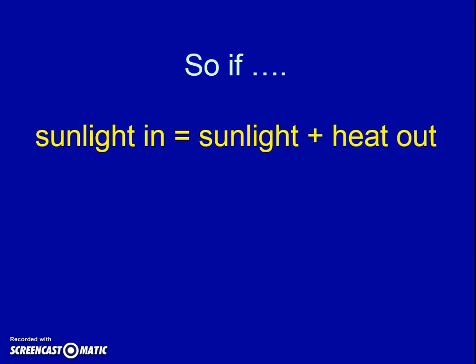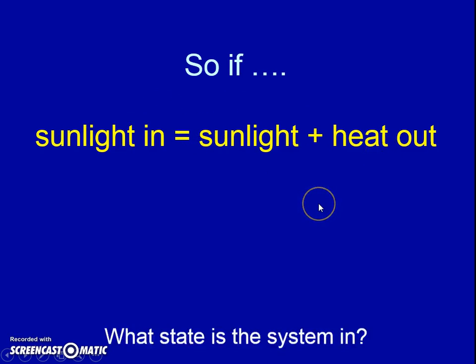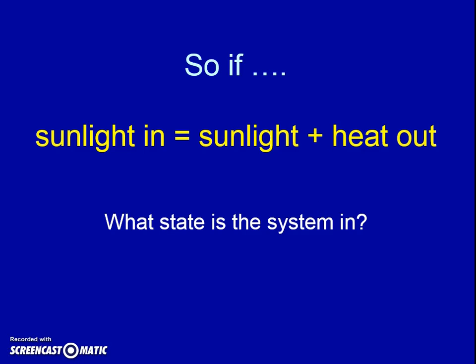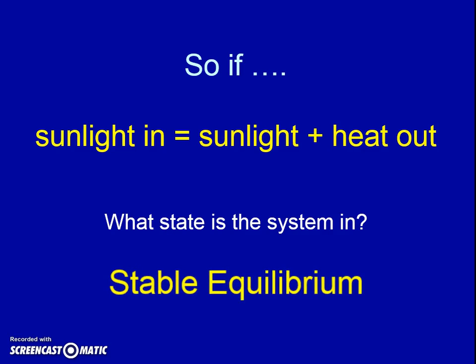The big idea: sunlight came in — 100% sunlight — and that sunlight enters the system. Now inside the system, a lot of heat came out. This is related to the fact that we're one direction; it does not loop back. Because of that, we continue to get more sunlight in. Are we stable or unstable? As long as the sun keeps doing its thing, we're in stable equilibrium. That's why an open system is so important — we need that sunlight coming in.